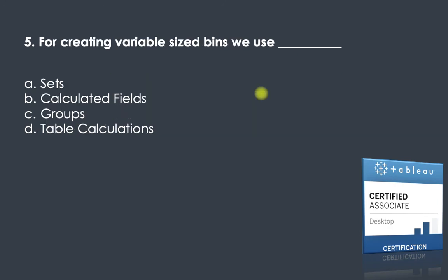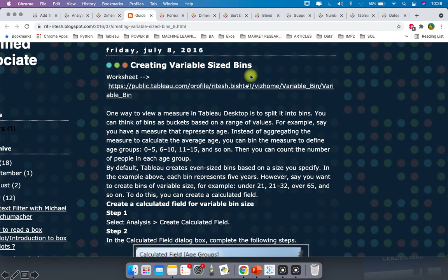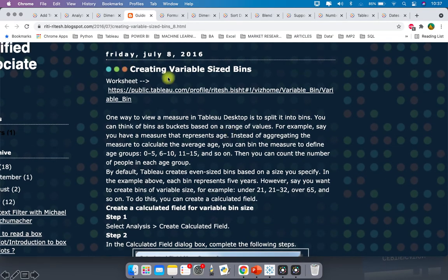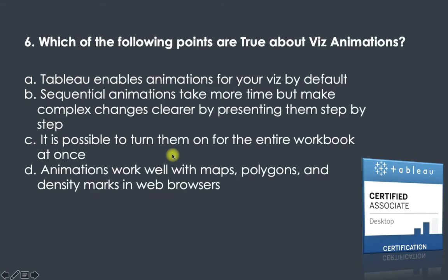Question five: for creating variable-sized bins, which do we use — sets, calculated fields, groups, or table calculations? Groups are static and not suitable for variable-sized bins. Sets only give in and out members. Table calculations work only on aggregated data. The only option left is calculated fields. You can read the article on creating variable-sized bins to see how calculated fields are used.